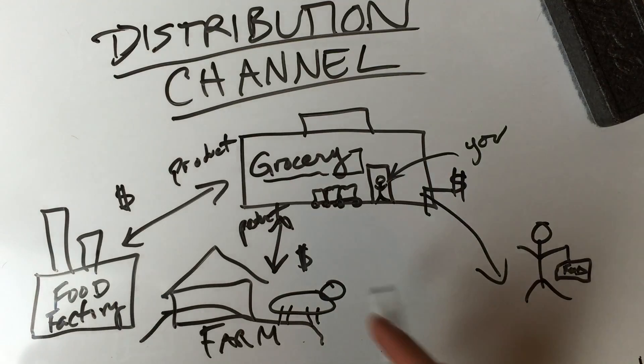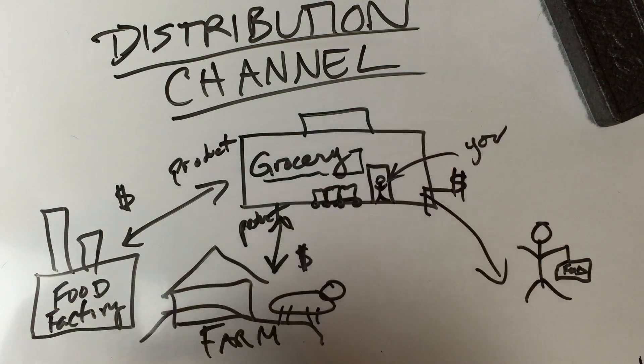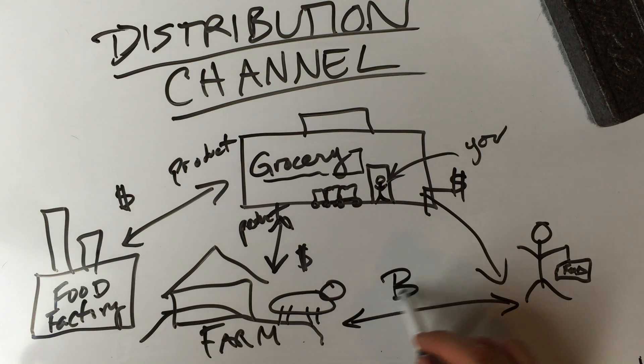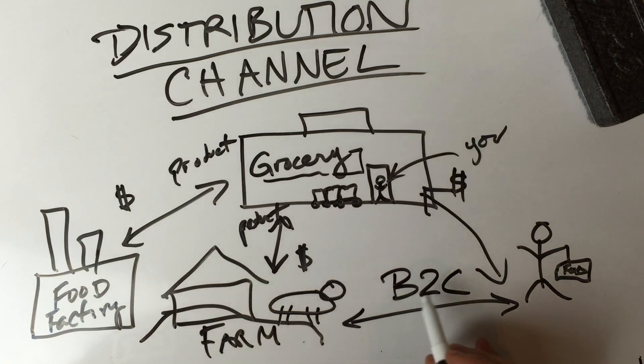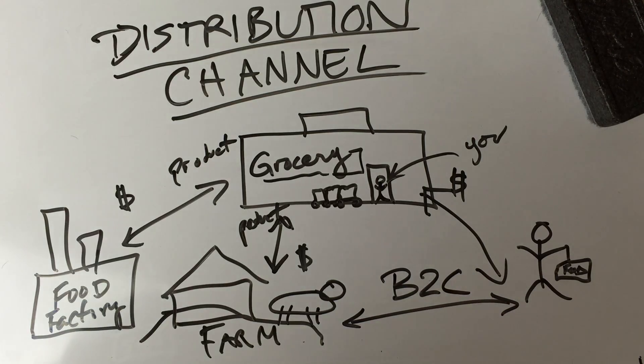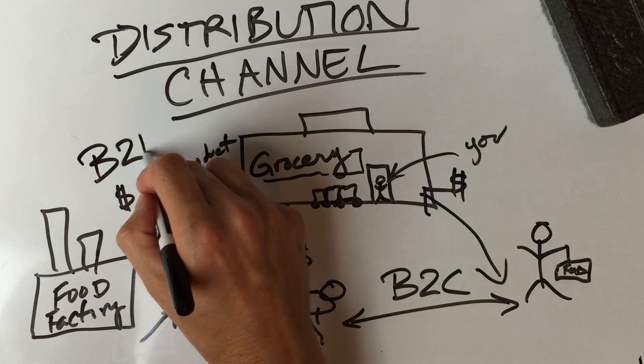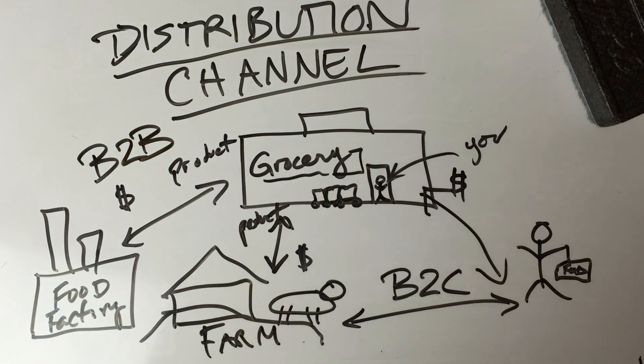Two things to think about here, maybe just one. This interaction here isn't the only way obviously to do it. You can sell directly to a consumer and that's usually called a business to consumer or a B2C type of transaction. And then over here is a B2B and you can figure out what the heck that stands for. Business to business. There you go. I told you anyway.